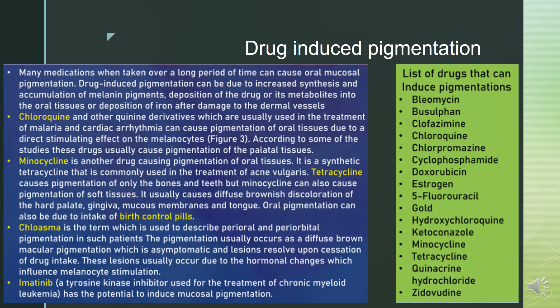Drug-induced pigmentation: various drugs can induce pigmentation, like bleomycin, clofazimine, chloroquine, chlorpromazine, doxorubicin, cyclophosphamide, estrogen, 5-fluorouracil, hydroxychloroquine, ketoconazole, minocycline, tetracycline, and zidovudine. Many medications when taken over a long period can cause oral mucosal pigmentation. Drug-induced pigmentation can be due to increased synthesis and accumulation of melanin pigments, deposition of the drug or its metabolites into the oral tissues, or deposition of iron after damage to the dermal vessels.